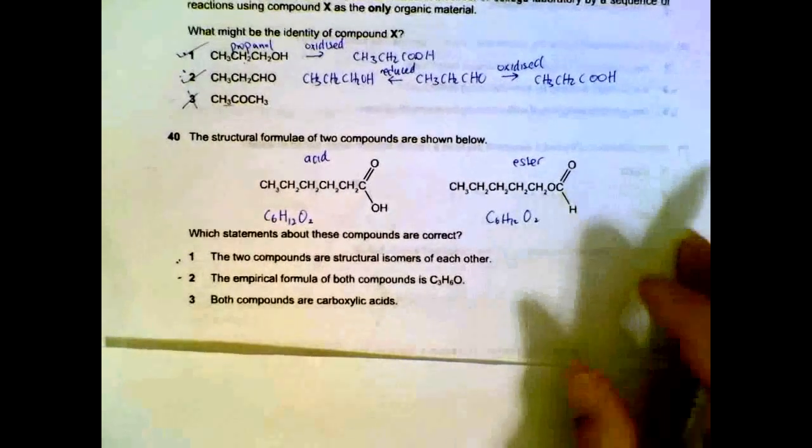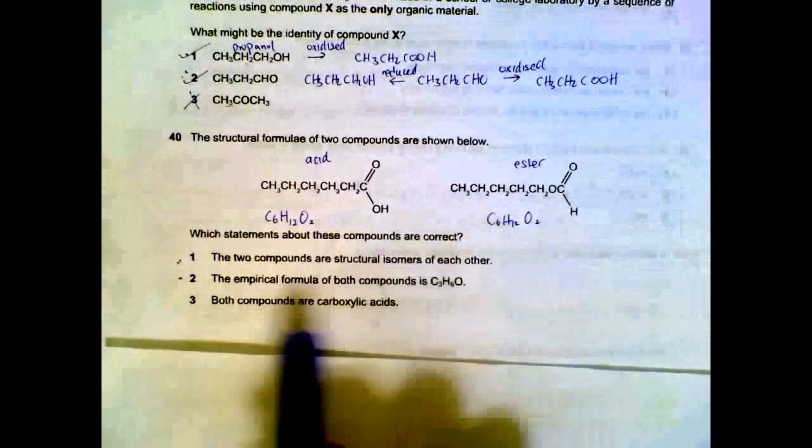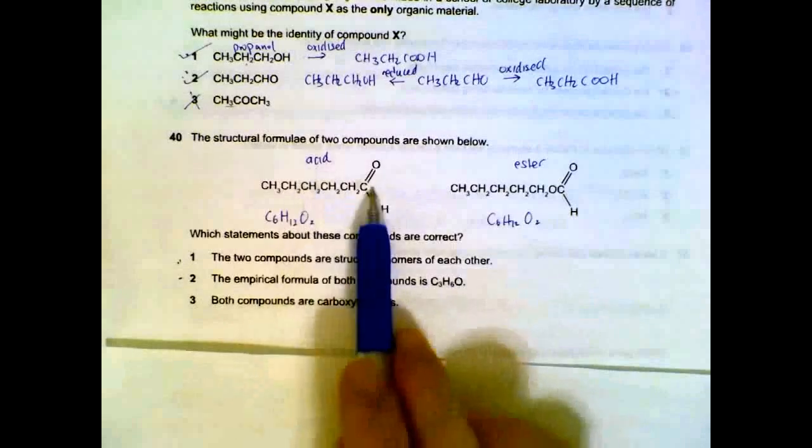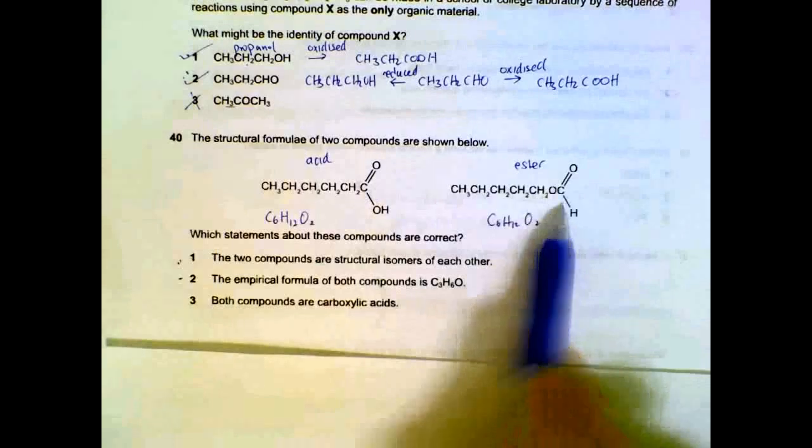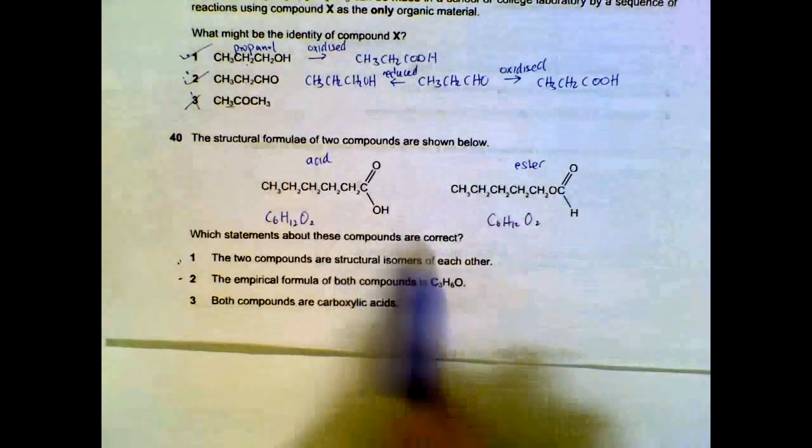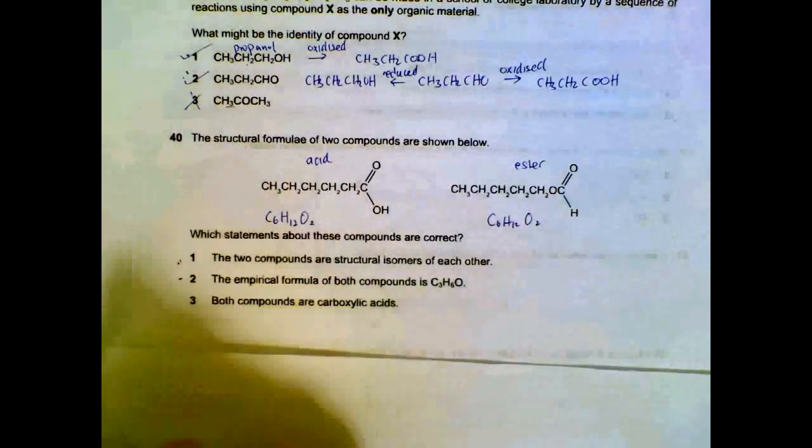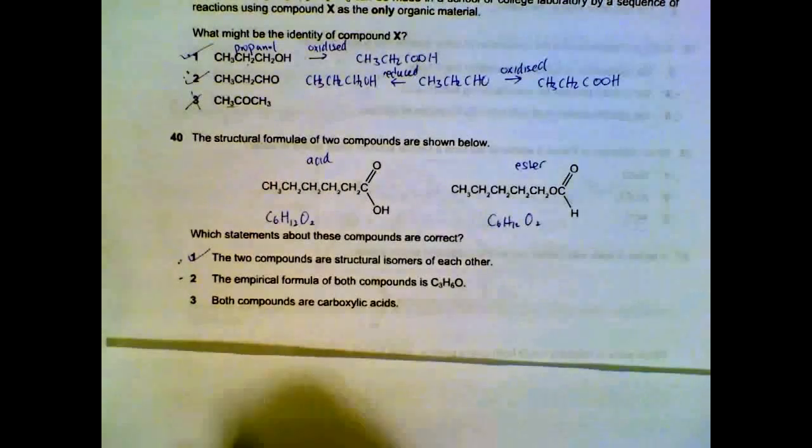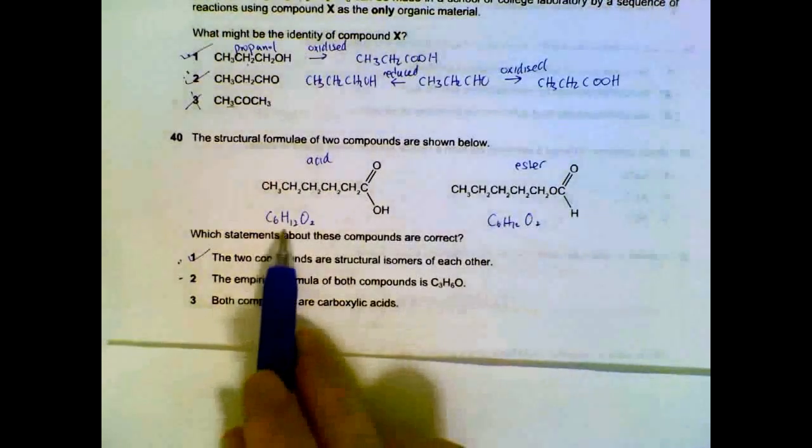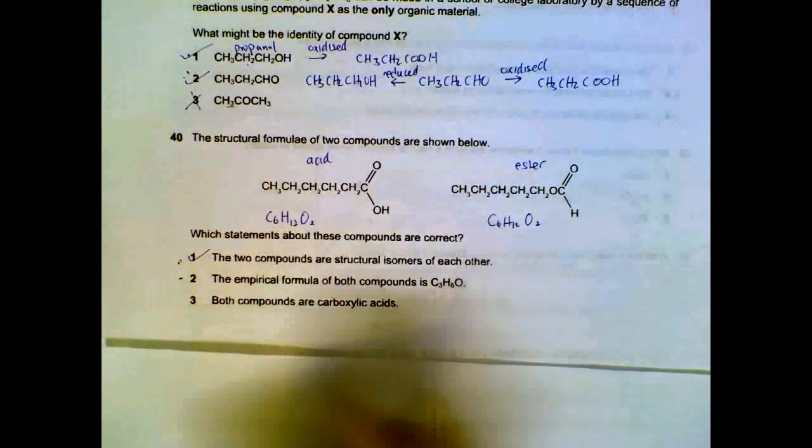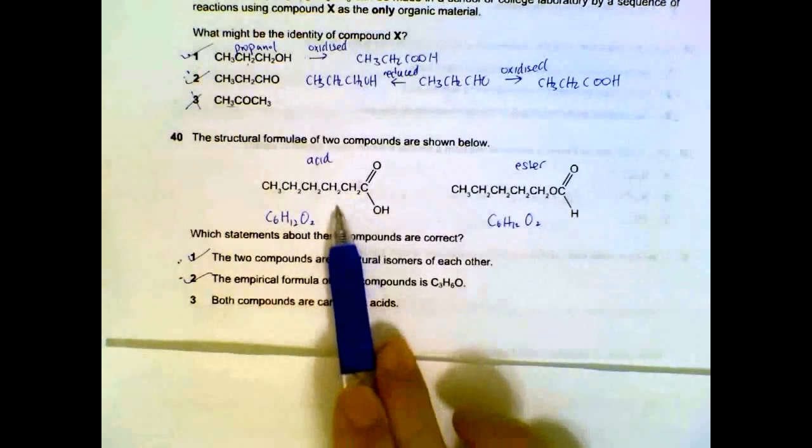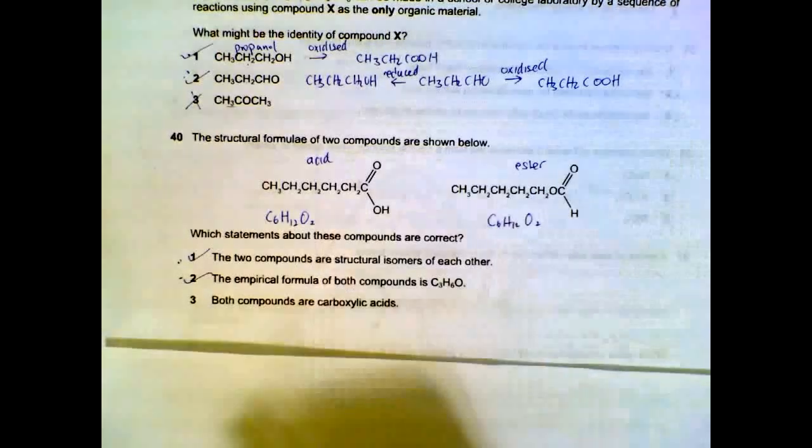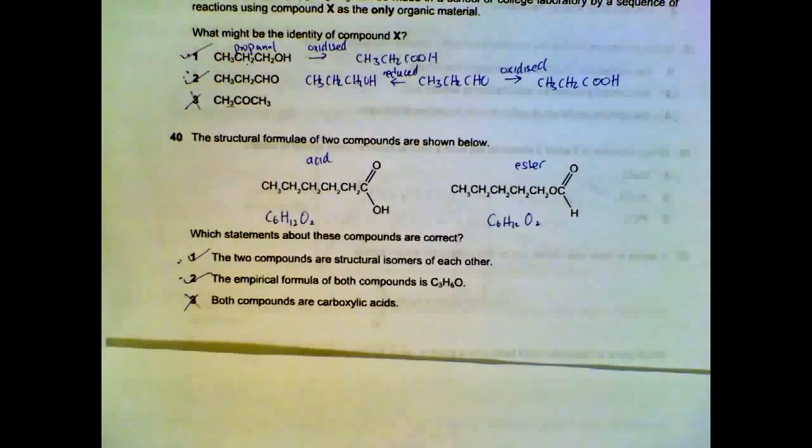Question 40. We have two structures. Which statements are correct? We have our acid here, COOH. We have our ester. So they are structural isomers of each other. They have the same formula but different structures. Their formulas can be simplified to C3H6O2, empirical formula for both of them. And as mentioned, the first one is an acid but the second one is an ester. So not both of them are carboxylic acids.